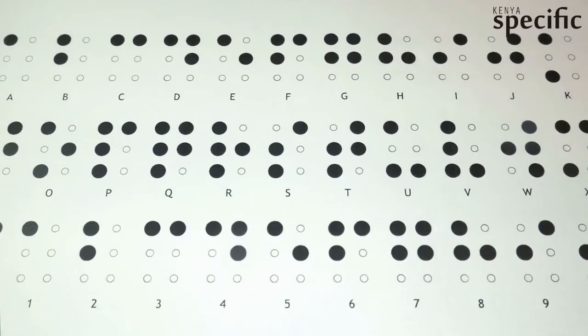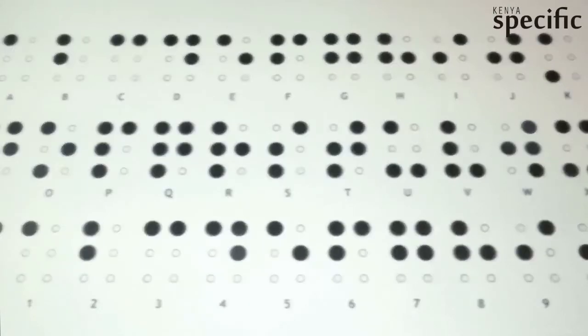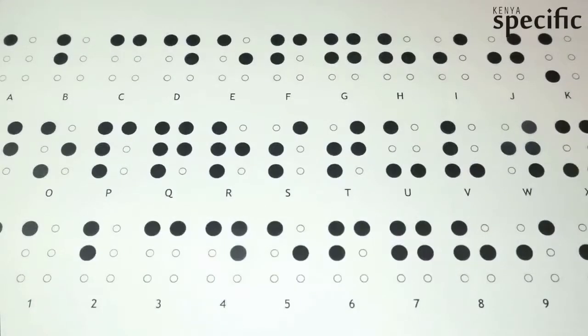Abraham Nemeth, whose frustrations in pursuing an academic career in math prompted him to develop the Nemeth Code, a form of braille that greatly improved the ability of visually impaired people to study complex mathematics, died on Wednesday at his home in Southfield, Michigan.